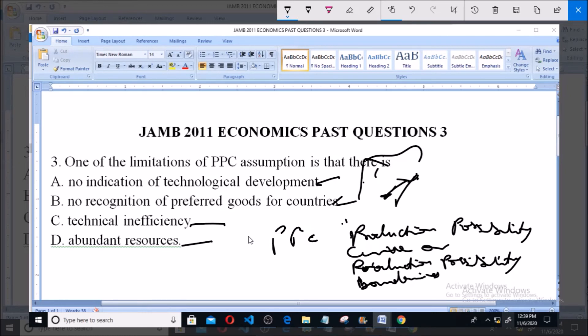So option B is the most suitable option from what we have talked about. Option B says no recognition of preferred goods for countries. Thank you and please subscribe for more questions.